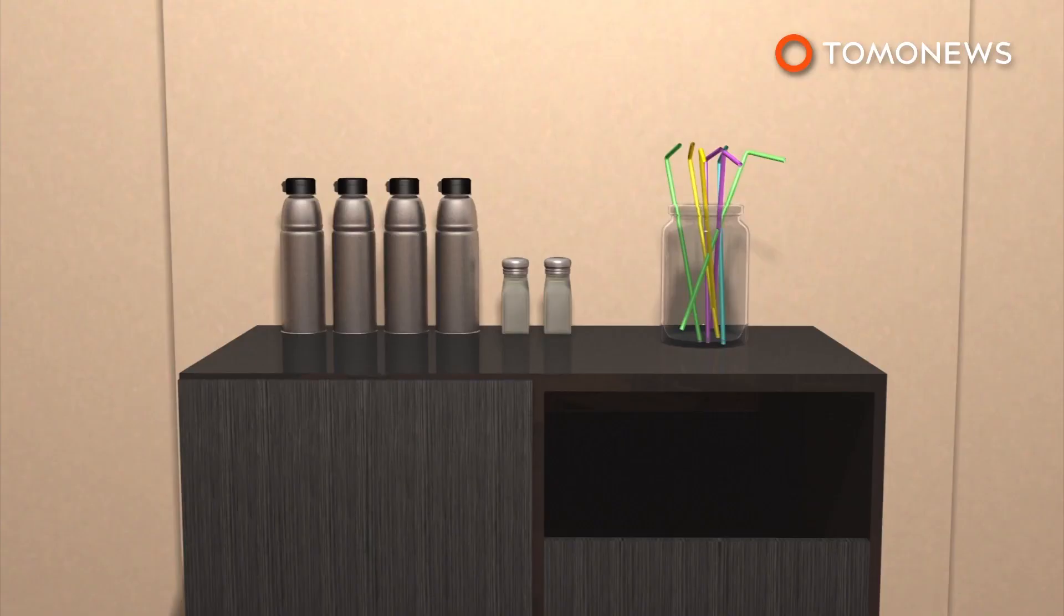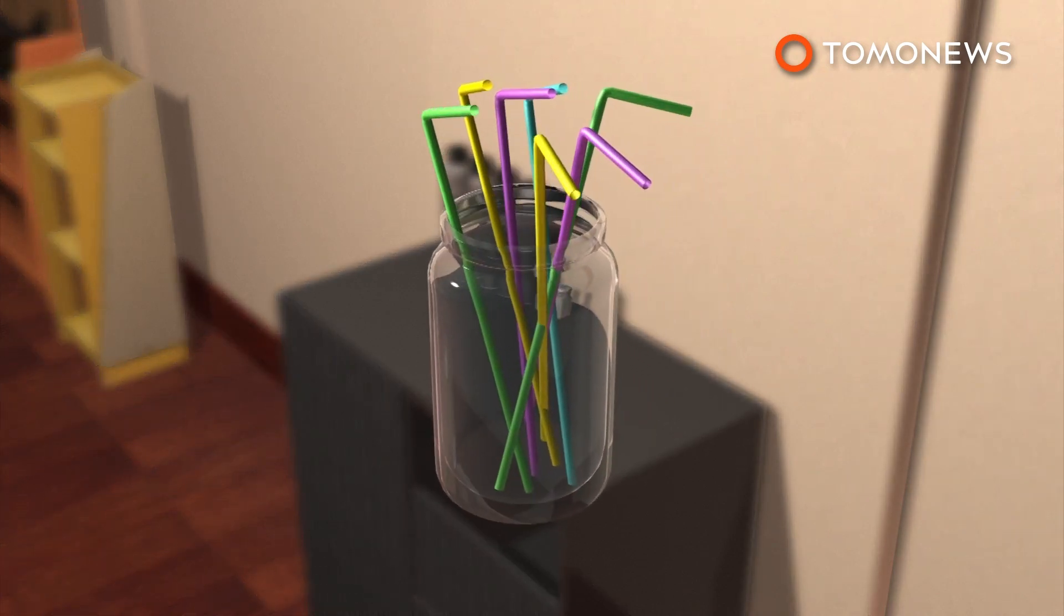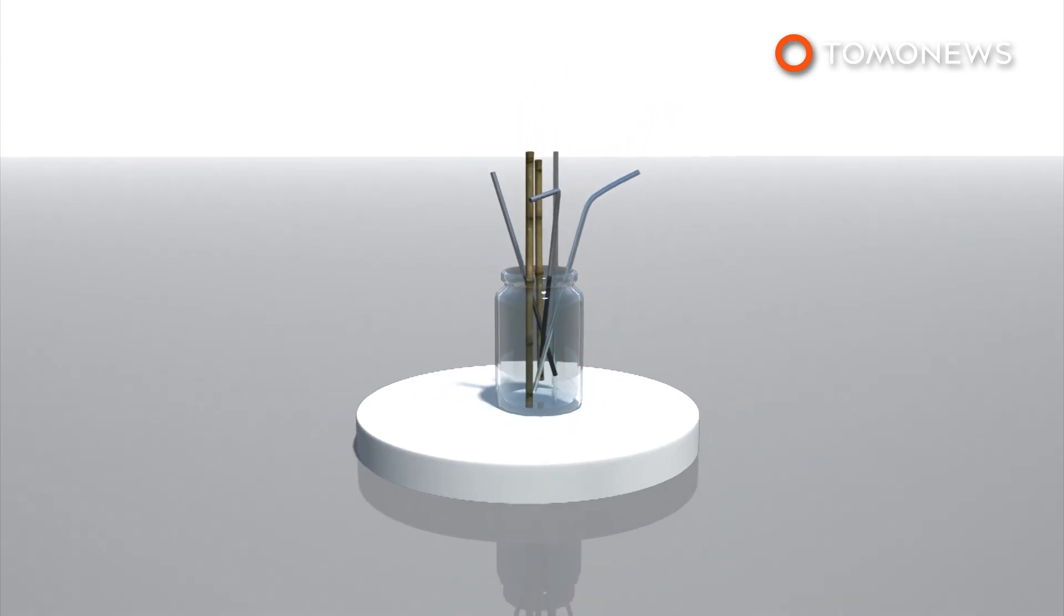Cities worldwide are increasingly discouraging the use of straws, with some even outright banning them. Others have vowed to phase out plastics over the next decades. Plastic straw alternatives have also started to gain in popularity.